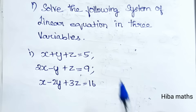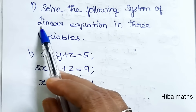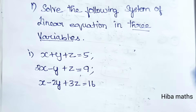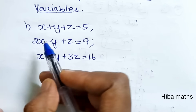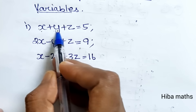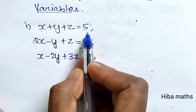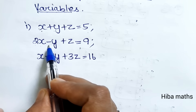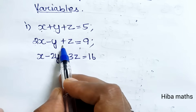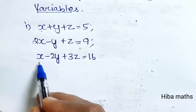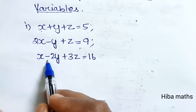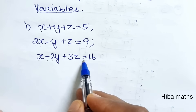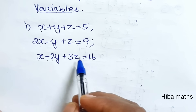First question: solve the following system of linear equations in 3 variables. The three equations are: first equation, x plus y plus z is equal to 5; second equation, 2x minus y plus z is equal to 9; third equation, x minus 2y plus 3z is equal to 16. Now there are 3 equations.